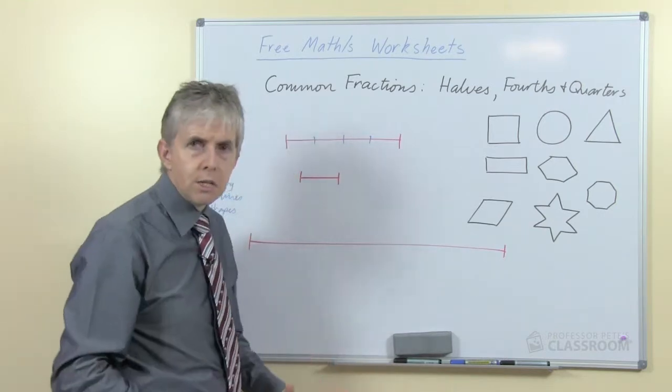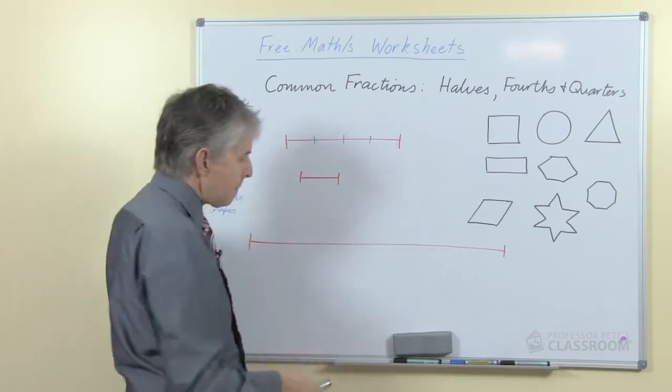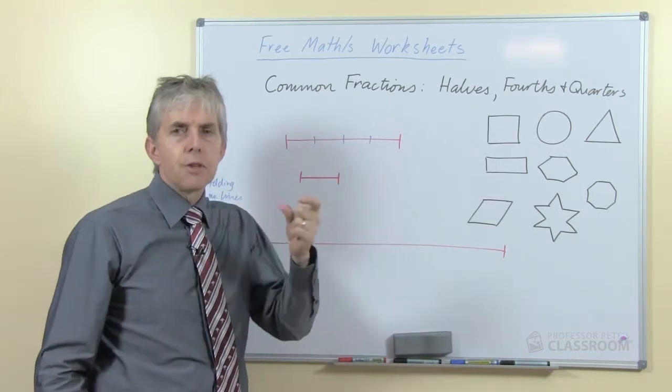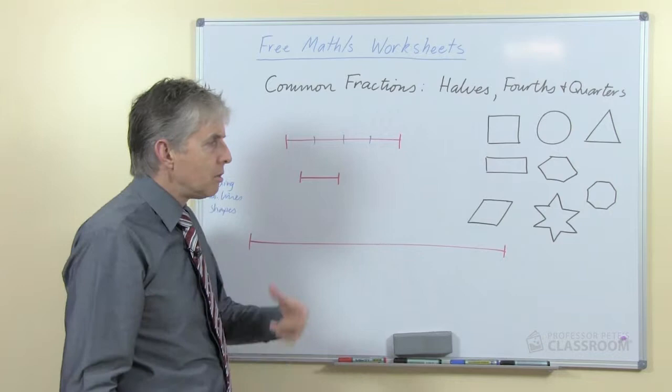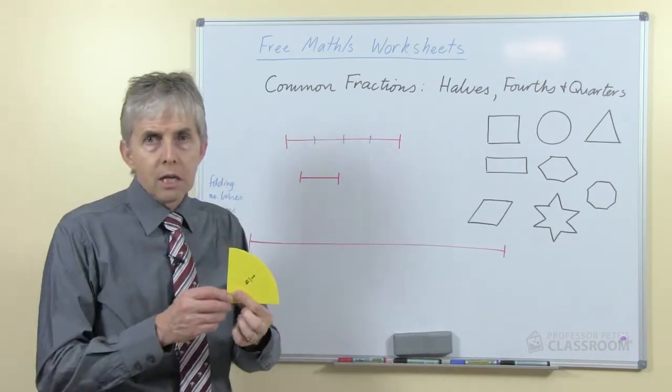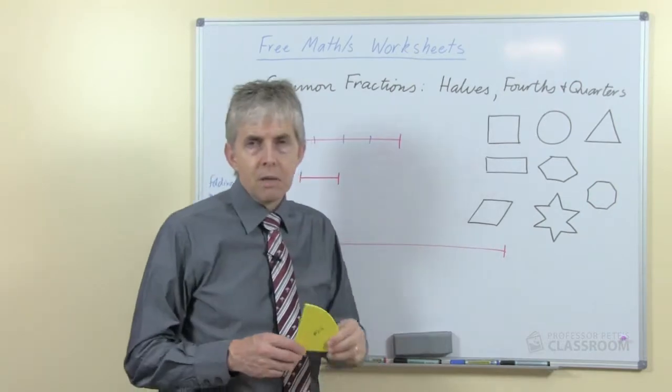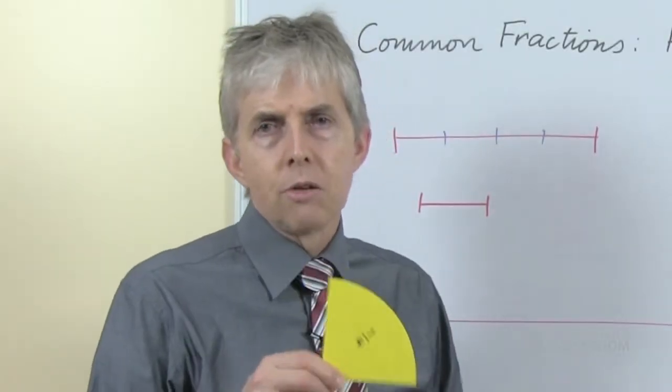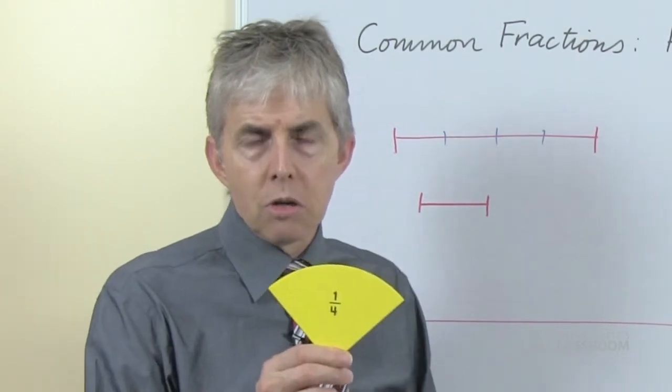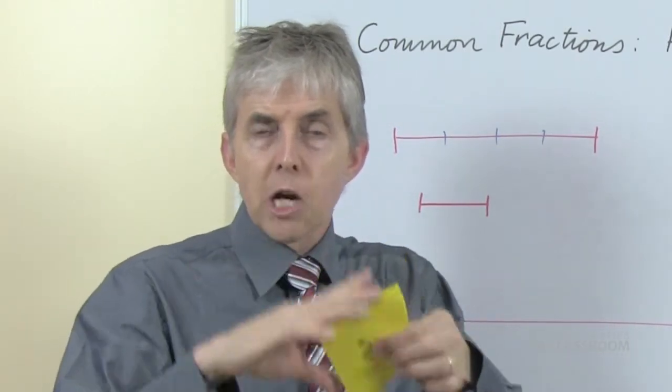We don't want to confuse the young children but we do want them to understand the mathematical basis for the idea. That's why we don't just always, for example, use circles when we're looking at shapes. If all our fractions are of a circle, they could easily get the idea that this is what a quarter looks like and this is the shape of a quarter.